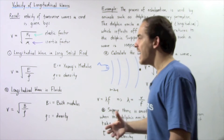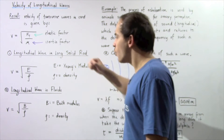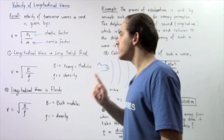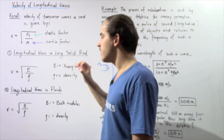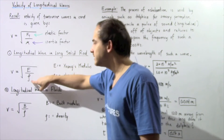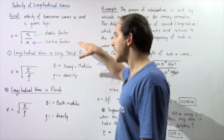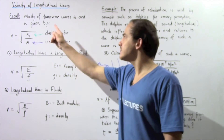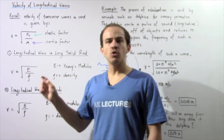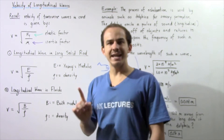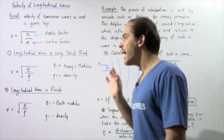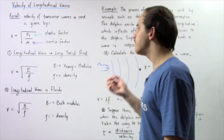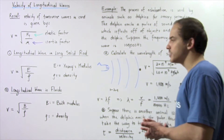For example, copper and steel solid rods will have different values for these two factors. Once again, the numerator is the elastic factor and the denominator is the inertia factor. Just like transverse waves, longitudinal waves propagating in a solid rod depend on the type of medium — the type of solid rod — that we're using.